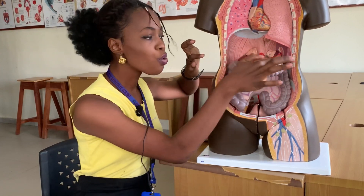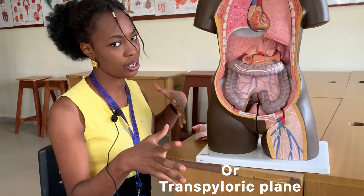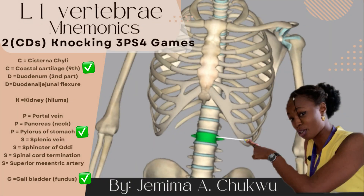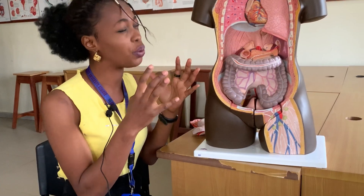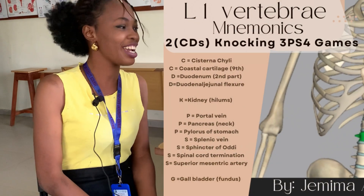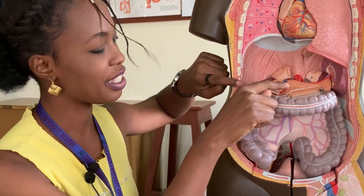Everything you're seeing here is an anatomical landmark of the L1 vertebra. You don't need to cram — just visualize. If I'm removing the liver and the stomach, I should be seeing the pancreas. Some things in that region will tell you they belong to L1 vertebra. I won't deprive you of the mnemonics — I'll drop them on screen — but let's stay with the illustration.